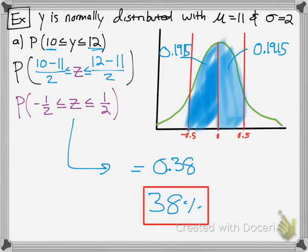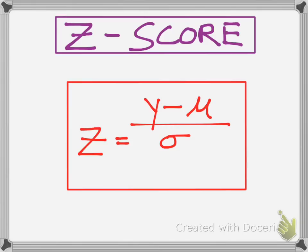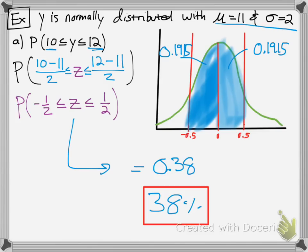So I hope that helped. Pretty much what we did was we converted our normal distribution into a standard normal distribution by using the z-score formula, and then from there, we used our table to calculate the probability of falling in between those two values.